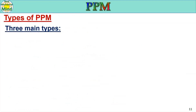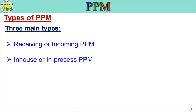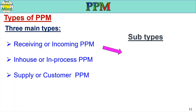Types of PPM: there are three main types — receiving or incoming PPM, in-house or in-process PPM, and supply or customer PPM. For receiving or incoming PPM, the subtype is supplier-wise PPM. If we calculate PPM for all suppliers combined, it is called receiving or incoming PPM.